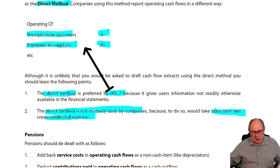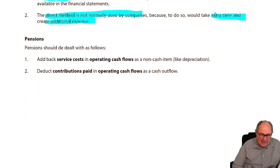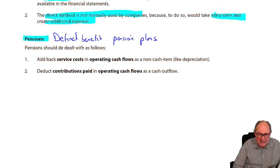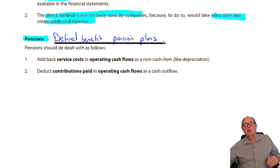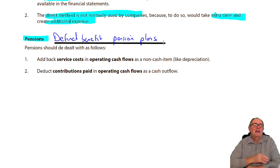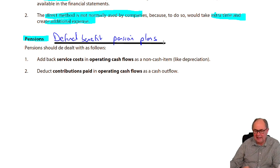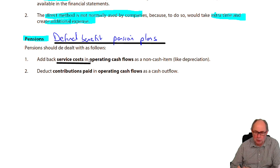The other point, just rounding off on cash flow, is about pensions — and in particular, defined benefit pension plans. If you haven't met those yet in your studies, don't panic, just make a note for later. But with a defined benefit pension plan, there's an accounting adjustment in the P&L called service cost. It's almost like depreciation — it's a non-cash item, and like other non-cash items, it gets added back. So anything called a service cost gets added back, like depreciation.